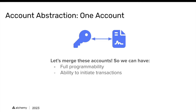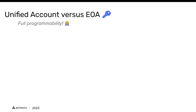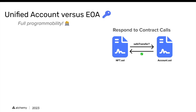We can get full programmability and the ability to initiate transactions. What does full programmability mean? We get the ability to respond to contract calls. You could think of an NFT that asks our account, "Is it safe to transfer an NFT over to you?" There is an existing standard for this, but you typically don't see it for user accounts since they're predominantly externally owned accounts. More imaginatively, you could have a subscription flow where a smart contract is allowed to withdraw a certain amount of money out of your account every month, and a smart contract can respond telling the subscription whether or not that is allowed.